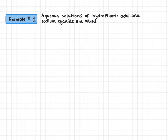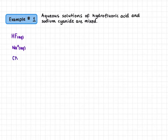Our first example is quite straightforward; we'll build up to harder examples as we go. Aqueous solutions of hydrofluoric acid and sodium cyanide are mixed. Our first step is to list everything present. Hydrofluoric acid is a weak acid, so we keep it together and won't ionize it. Sodium cyanide is a soluble ionic compound, so we dissociate it into sodium and cyanide. Because these are aqueous solutions, water is present as well — so those are the four species present.